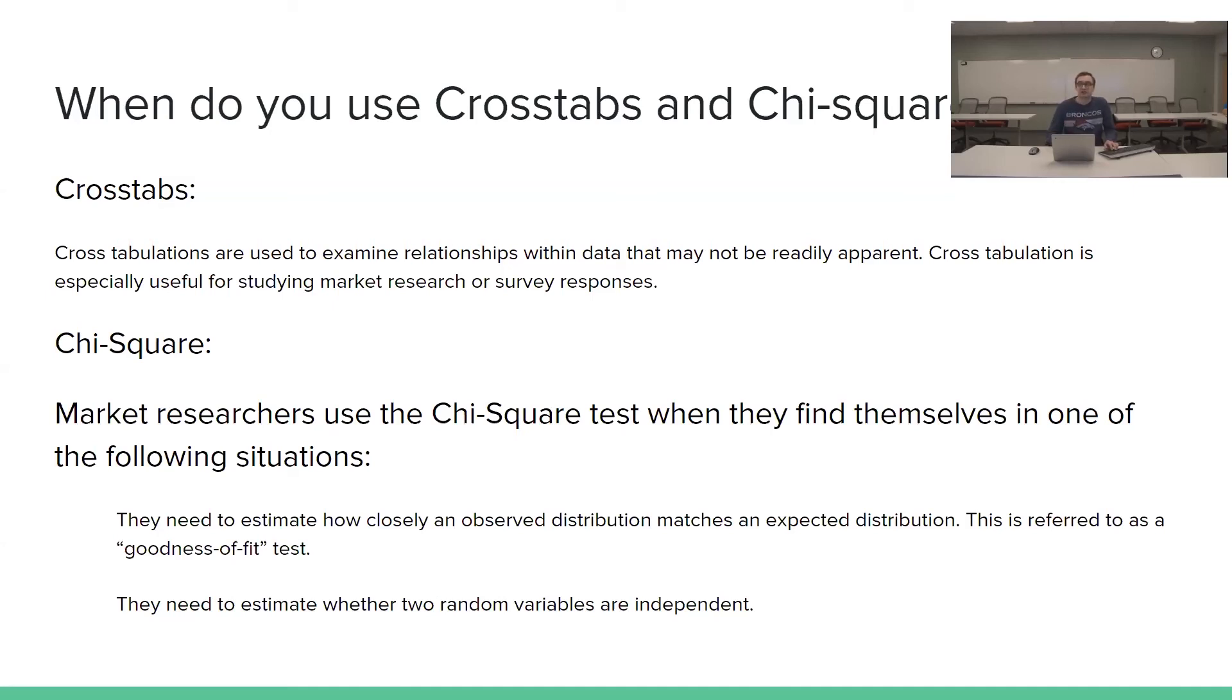Market researchers use the chi-square test when they find themselves in one of the following situations. They need to estimate how closely an observed distribution matches an expected distribution and this is referred to as a goodness of fit test. And they also would use it when they need to estimate whether two random variables are independent of one another.